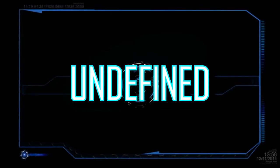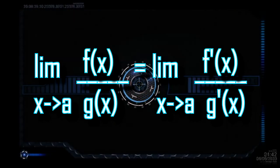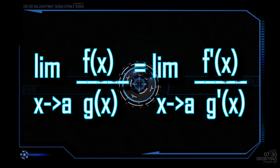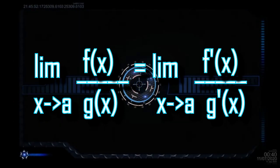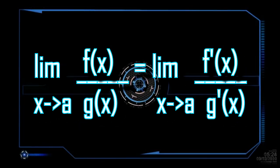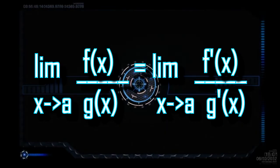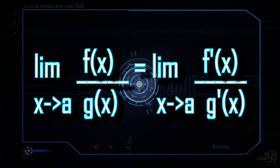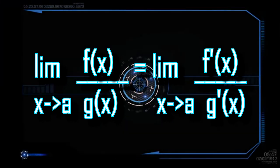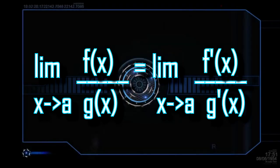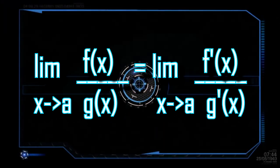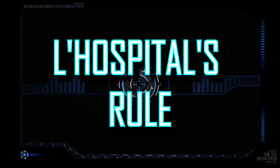If the functions f(x) and g(x) are continuous in an interval containing x equals a, and if their derivatives exist, and the derivative of g(x) is not equal to 0 in this interval, then when f(a) equals 0 and g(a) equals 0, we have the limit of f(x) over g(x) as x approaches a is equal to the limit of the derivative of f(x) over the derivative of g(x). This is L'Hôpital's rule.